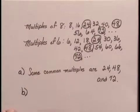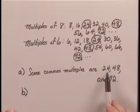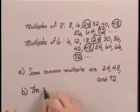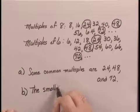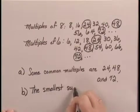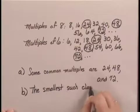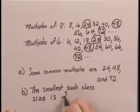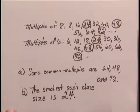Part B asks us to find the smallest such class size that would work. And looking at our common multiples, we see that the smallest one is 24. So, the smallest such class size is 24.